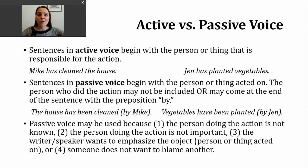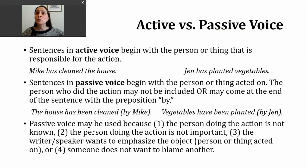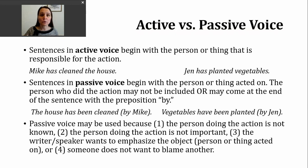In the first sentence, Mike is responsible for the action of cleaning. In the second sentence, Jen is responsible for the action of planting. Sometimes in English, you will hear or see sentences written in the passive voice. A sentence in the passive voice begins with the person or thing that is receiving the action or that is being acted on. The person who is responsible for the action might not be included in the sentence, but if they are included, they come at the end, usually after the preposition by.